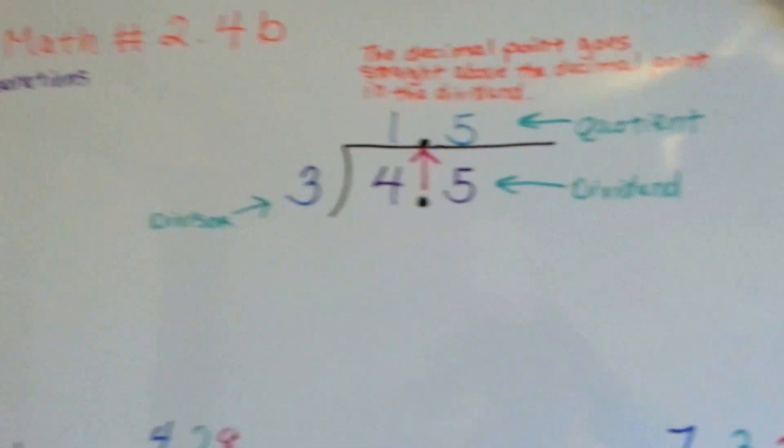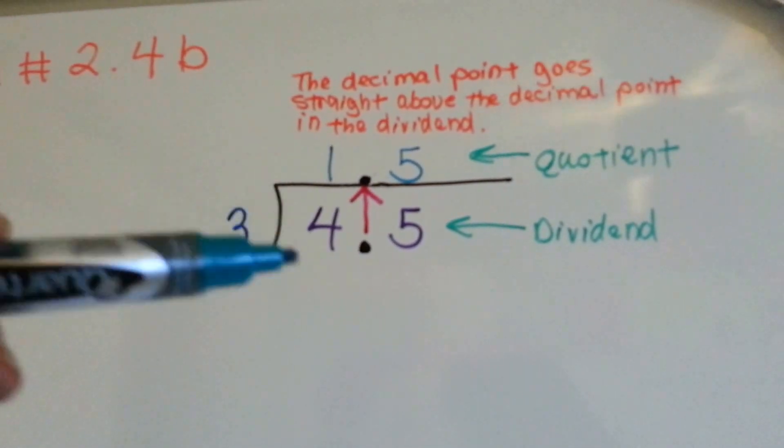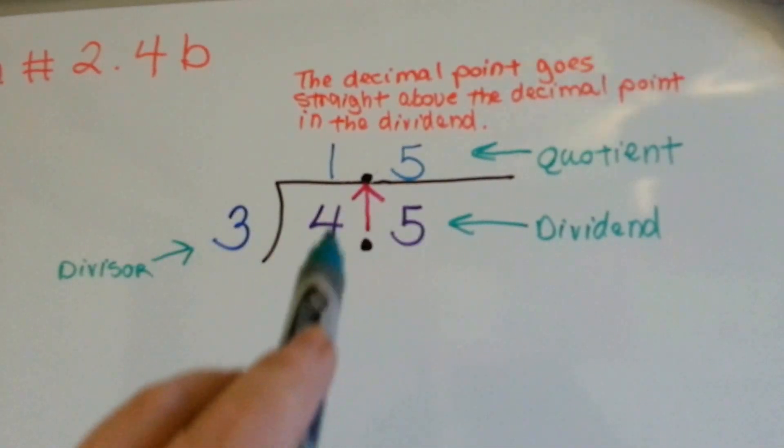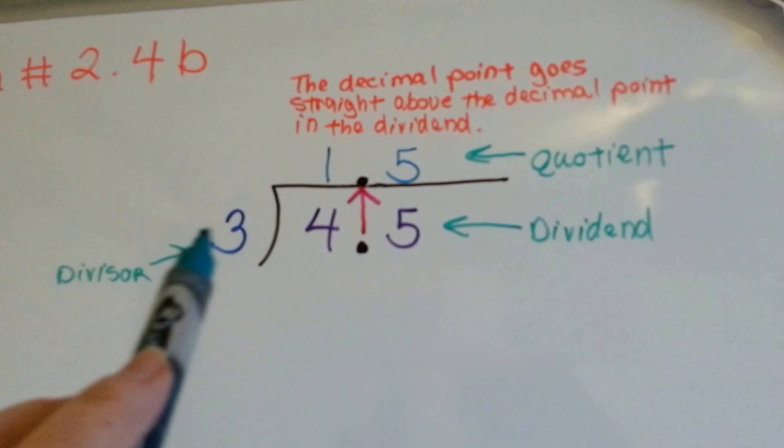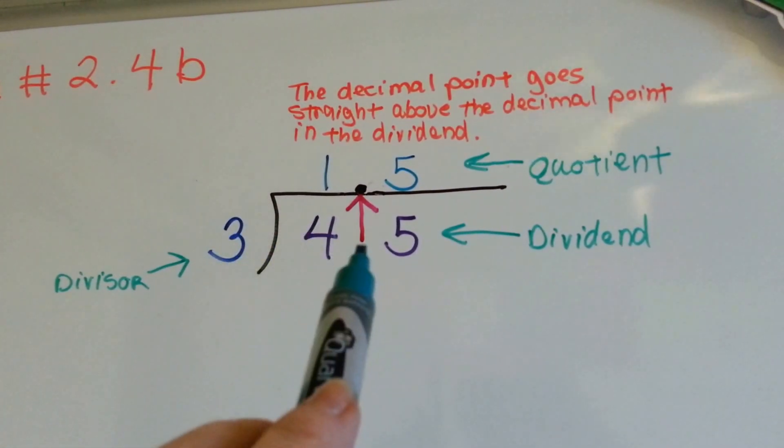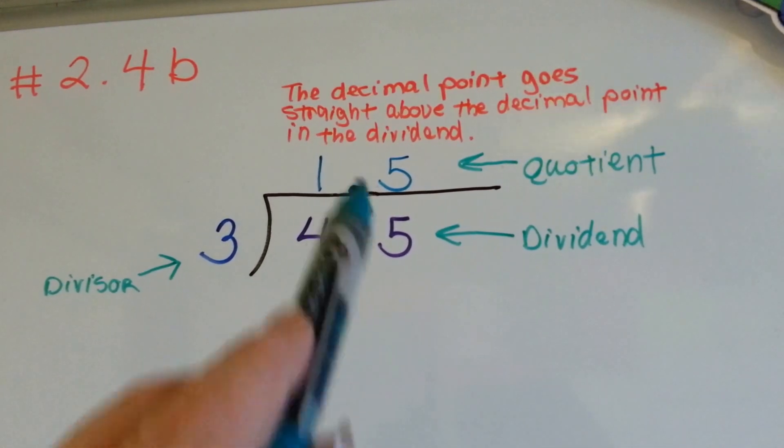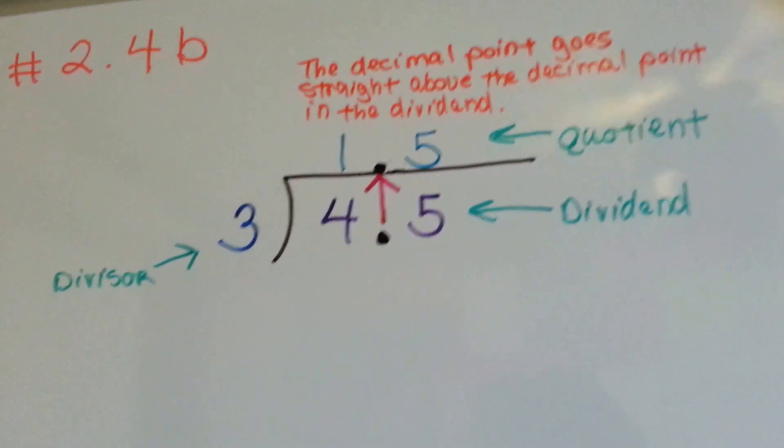I don't know if you remember from last year, but the quotient is on the top, the dividend is the big guy that we're trying to divide, and the 3 is the divisor. It's the little guy on the outside that's going into the dividend, and we always put our decimal point straight up into the quotient.